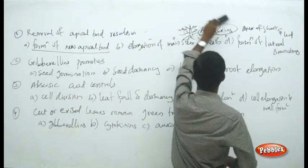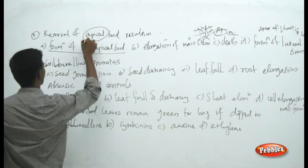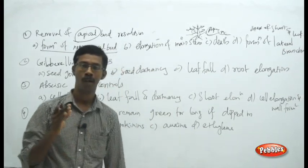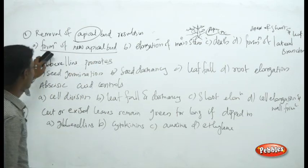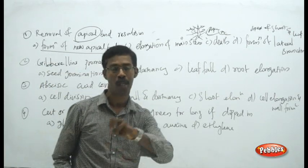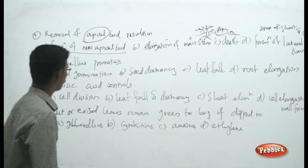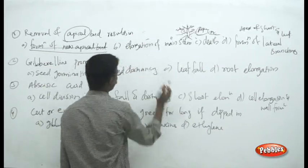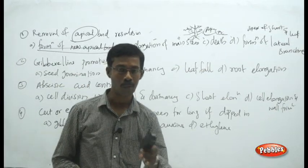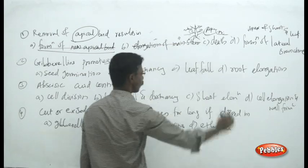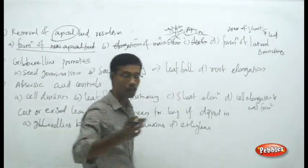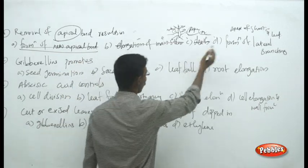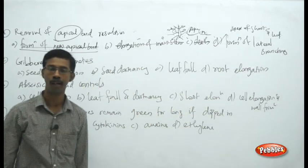The question is: you are going to remove the apical region, meaning you are removing the auxin concentration from the plant. Formation of new apical bud is not possible because you removed the apical region and its auxins. Elongation of main stem is also not possible. Death will not happen because you only removed the tip — you did not do major damage. So the remaining choice is formation of lateral branching.